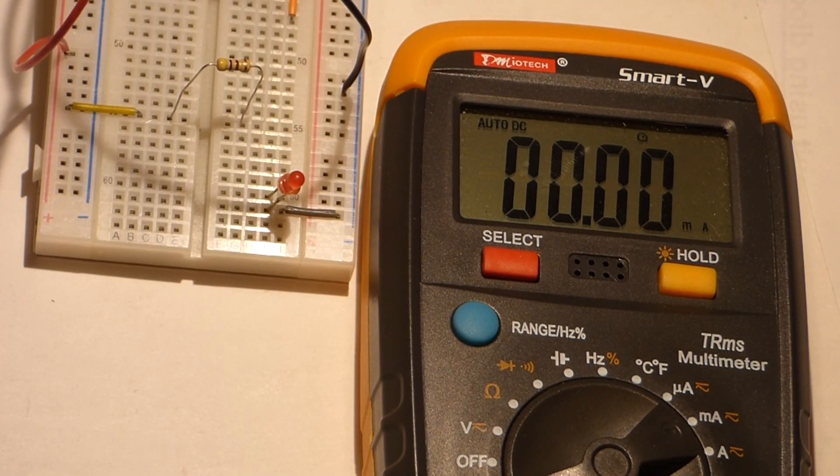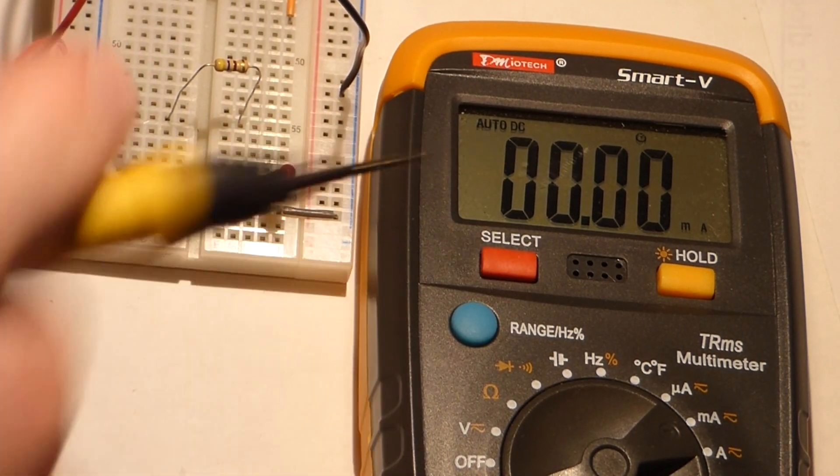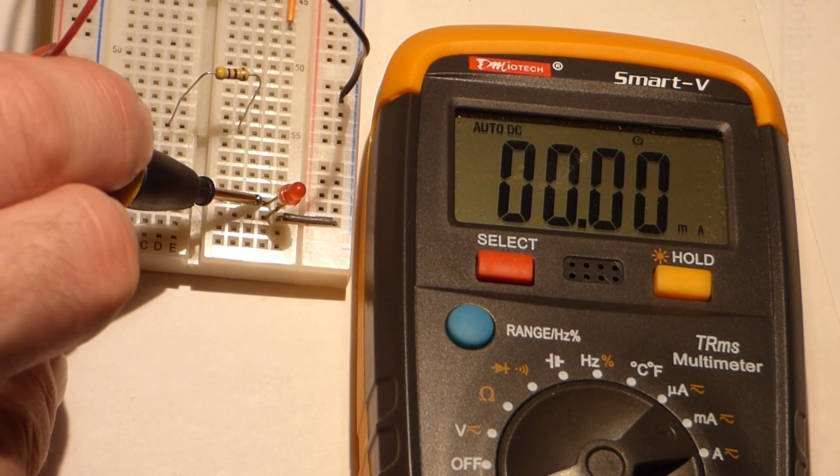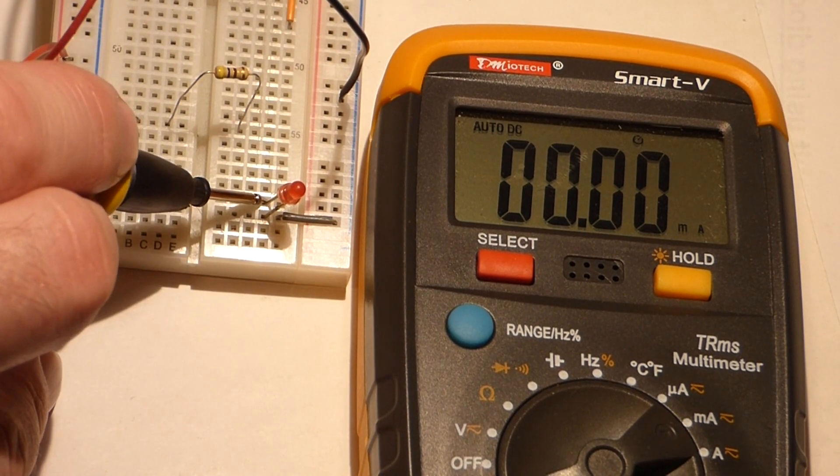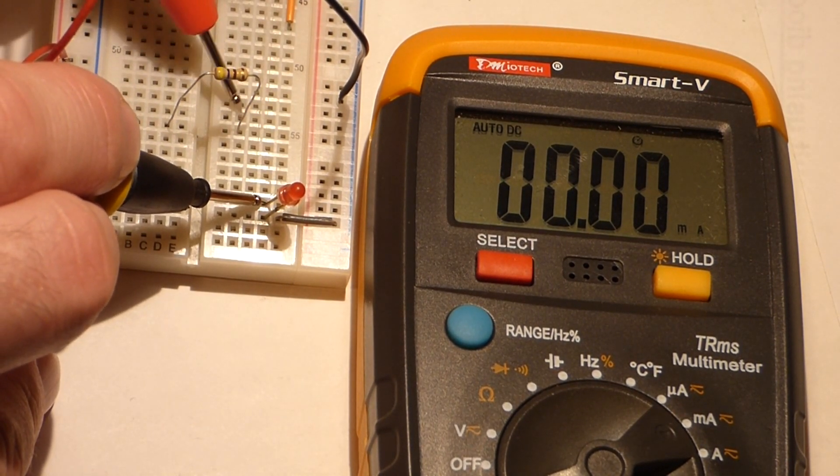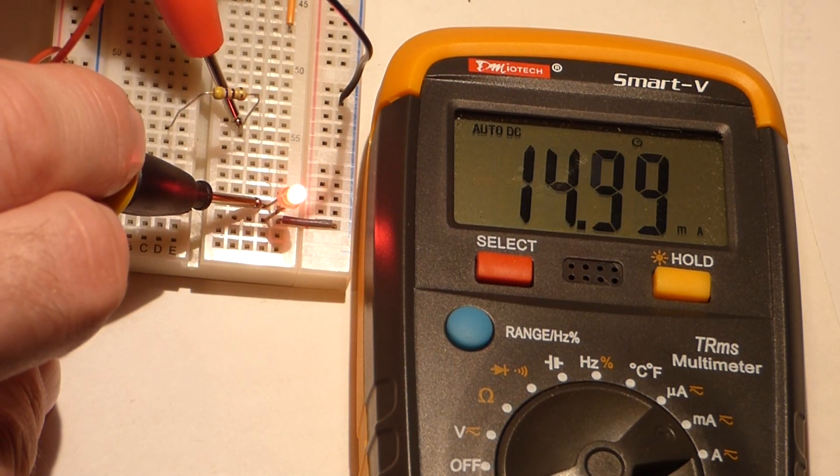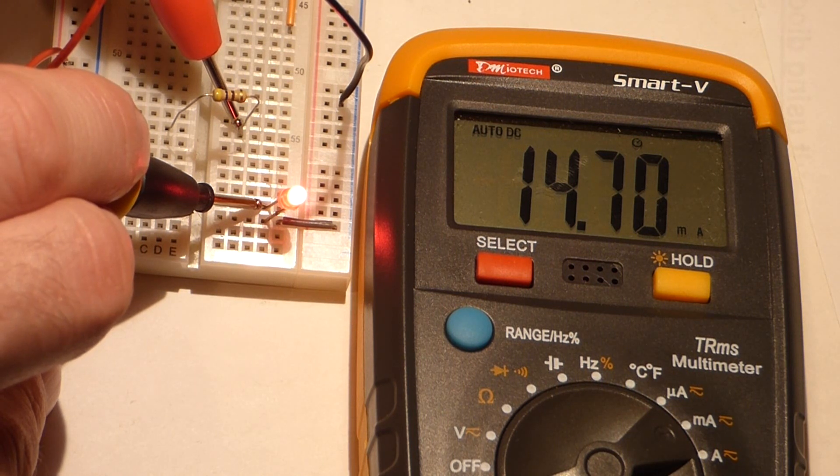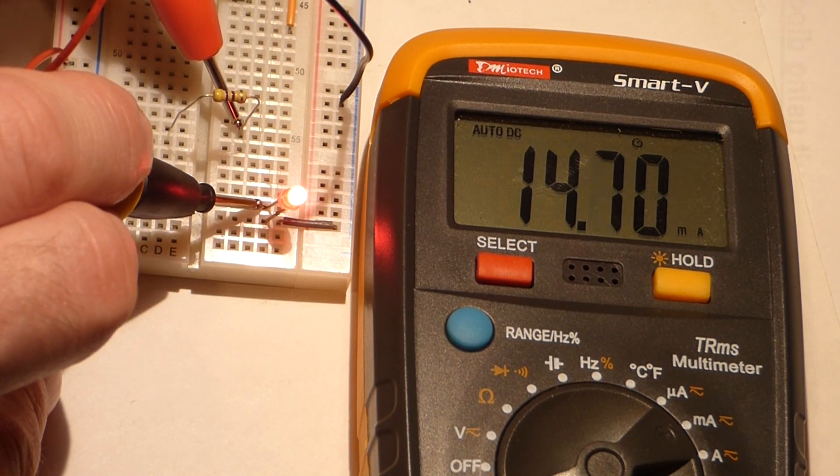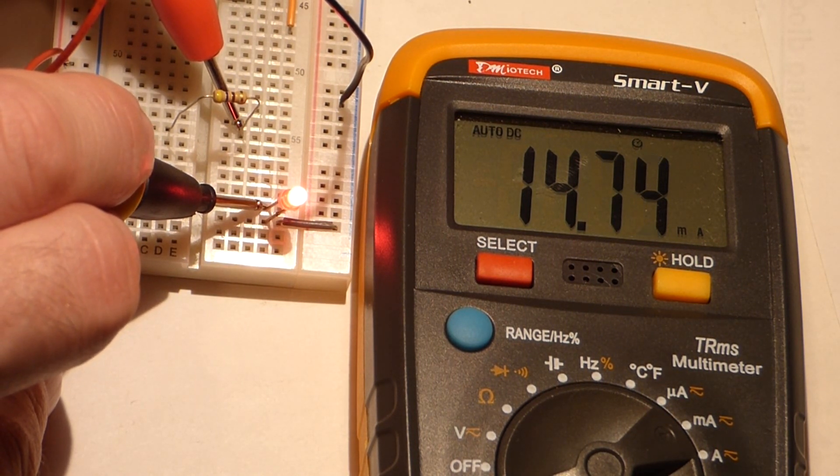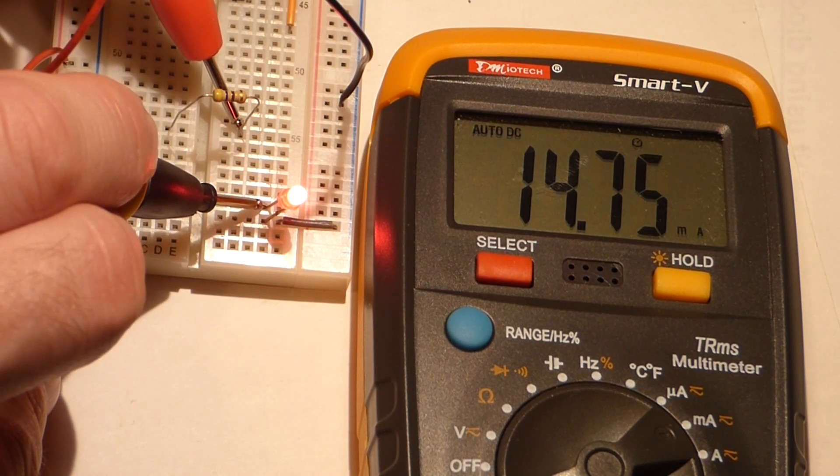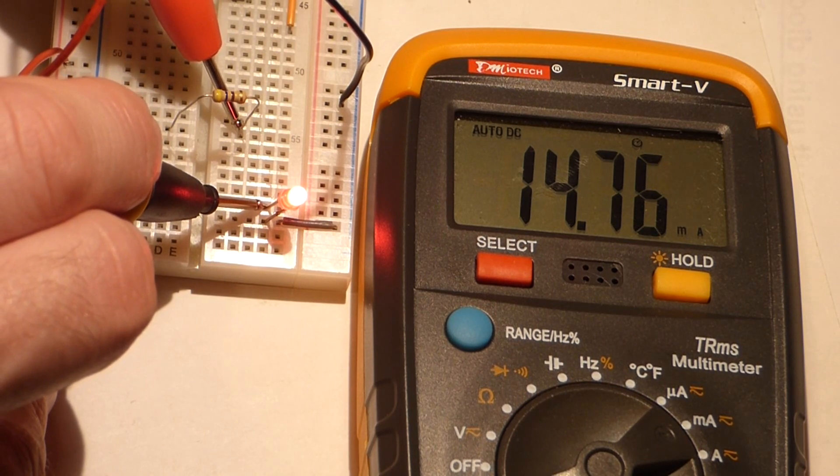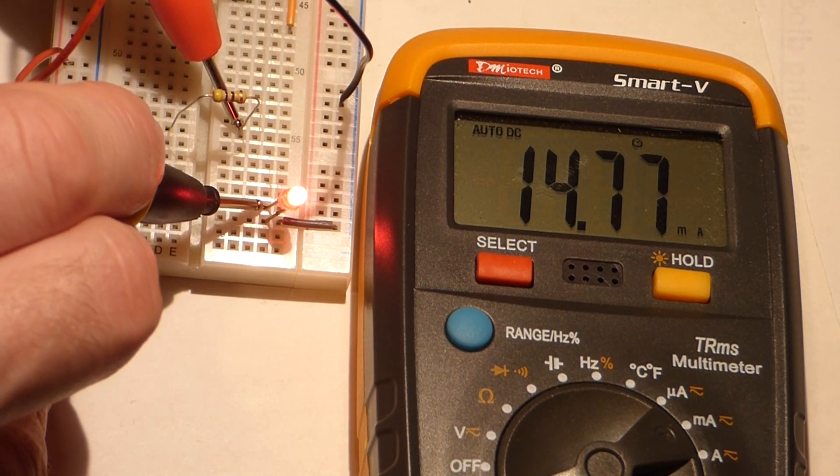And now we're ready to take our reading. In this case, we put the black probe in the opening towards the negative side of the circuit, and then the red probe we connect to the opening on the positive side, which is the end of the two components. Here you can see we've got about 14.7 milliamps going through the circuit. Because remember, the current going through these components is also going through the meter.